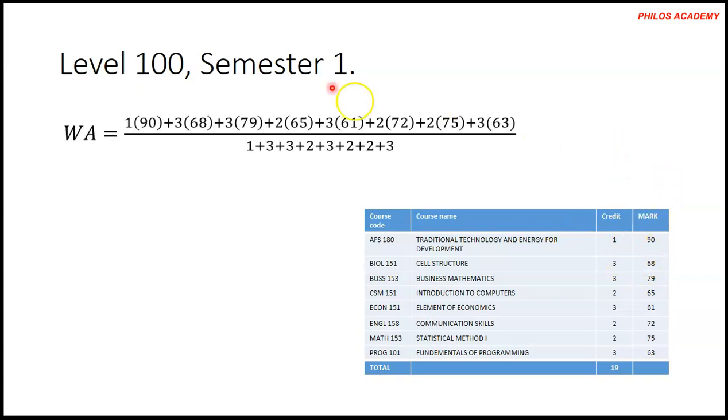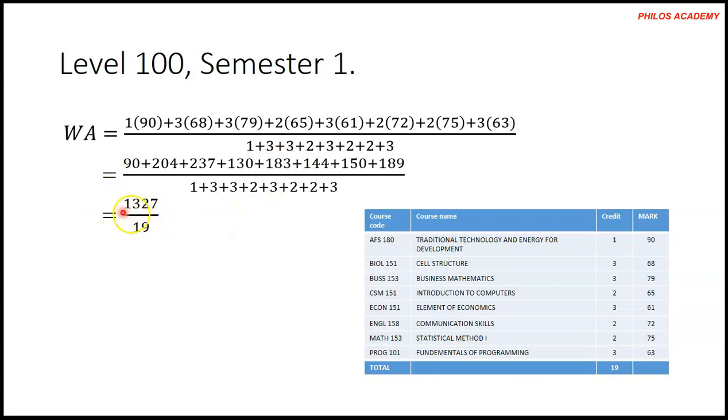So it's sigma CM over sigma C - that's sum of credit hours times each mark divided by total credit hours. When you put everything together, you get your total weighted point to 1227 and total credit hours 19. When you calculate this, you get 69.84. So this is your weighted average. Let me put it as level 100, semester 1 - 69.84.